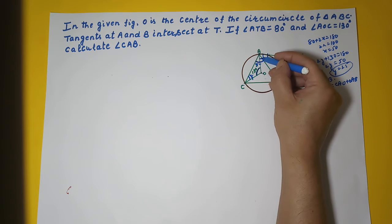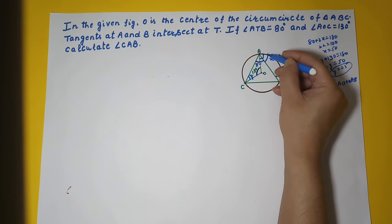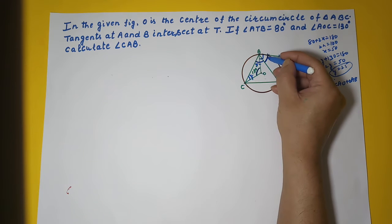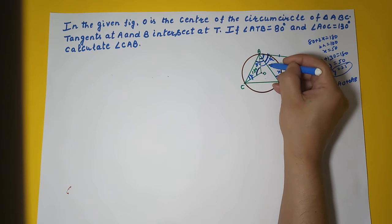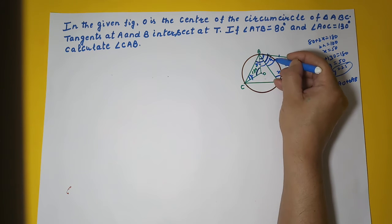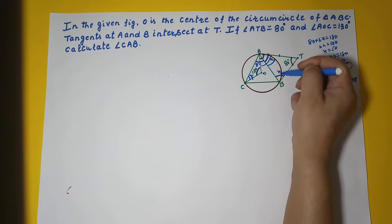This entire angle is 90 degrees, and this angle is 50 degrees. So 90 minus 50 from this entire angle, if you are subtracting this part you are getting OAB.